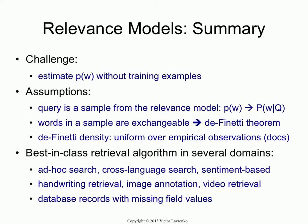Let's summarize. The reason we started doing this is we wanted to estimate pw — the probability of a word in the relevant documents — but we don't have any training examples. The big assumption we made is we approximate it as a conditional probability of seeing that word from some distribution, assuming the query was sampled from it — that's the sampling game. Then we estimate the joint via the De Finetti theorem, assuming words are exchangeable so order doesn't matter. That gives us a particular form, and we set a density function uniform over the types of urns we see in our data — the documents. Doing this gives a system that's really good for basic retrieval and also has nice results for image annotation or handwriting retrieval.